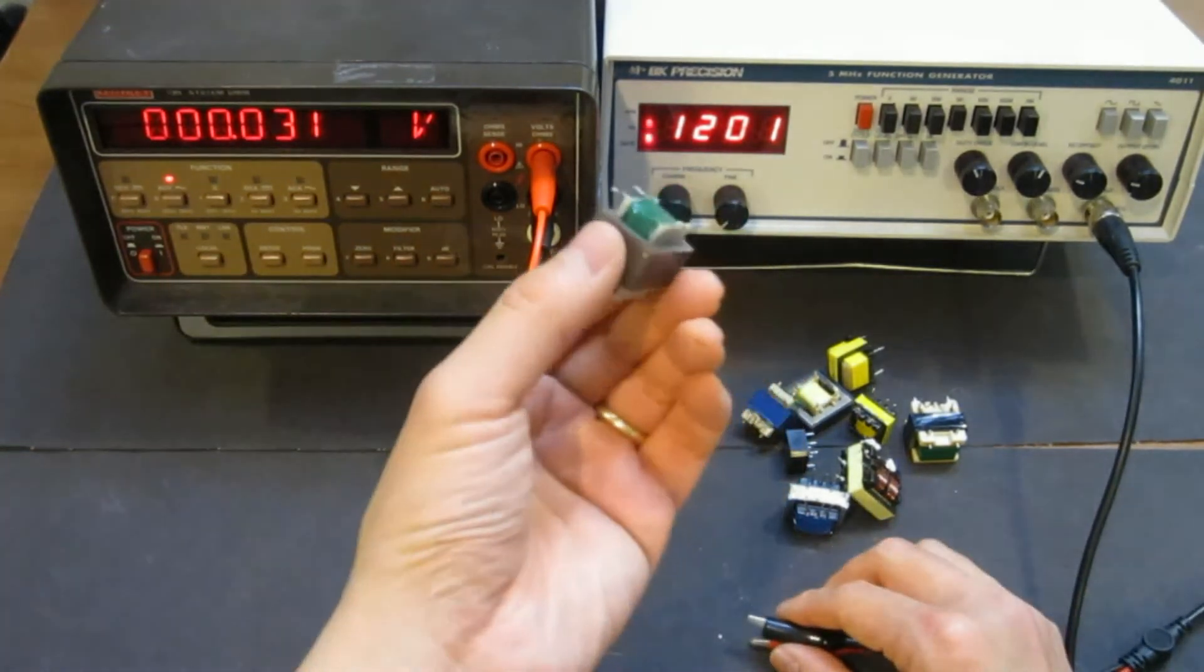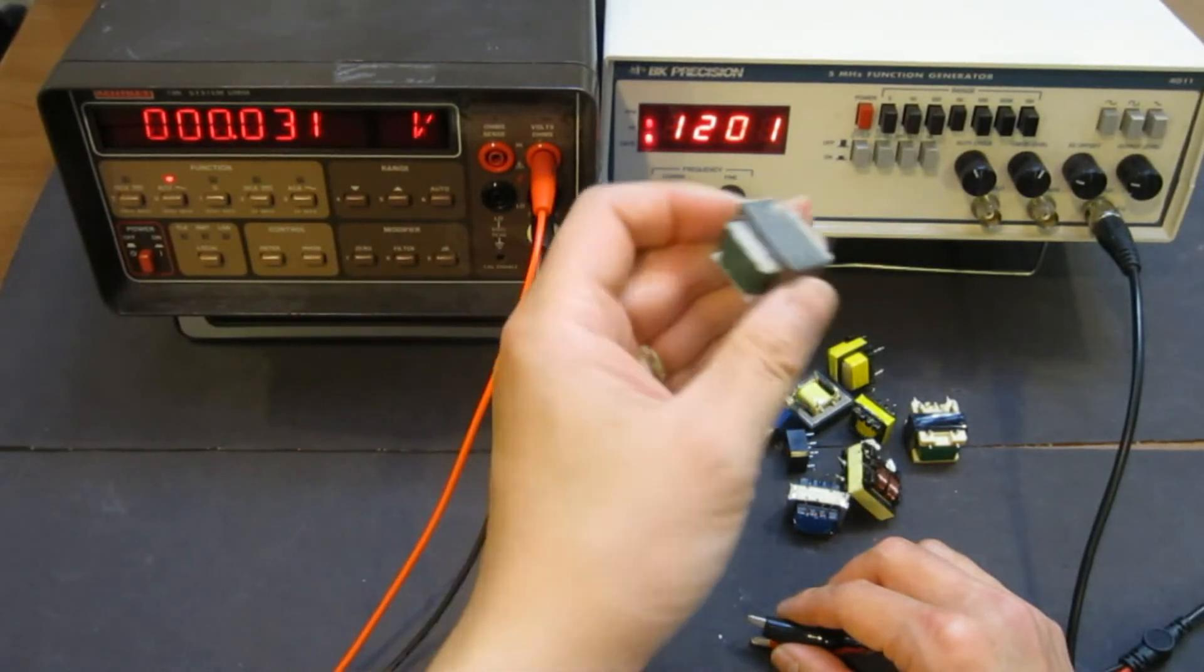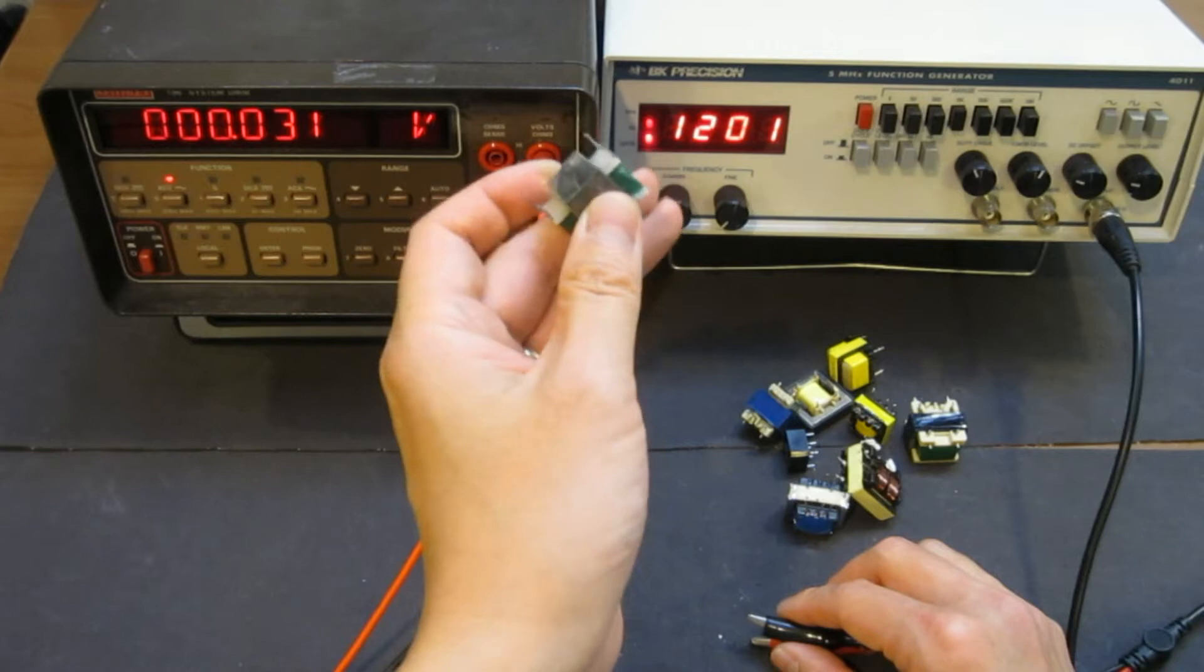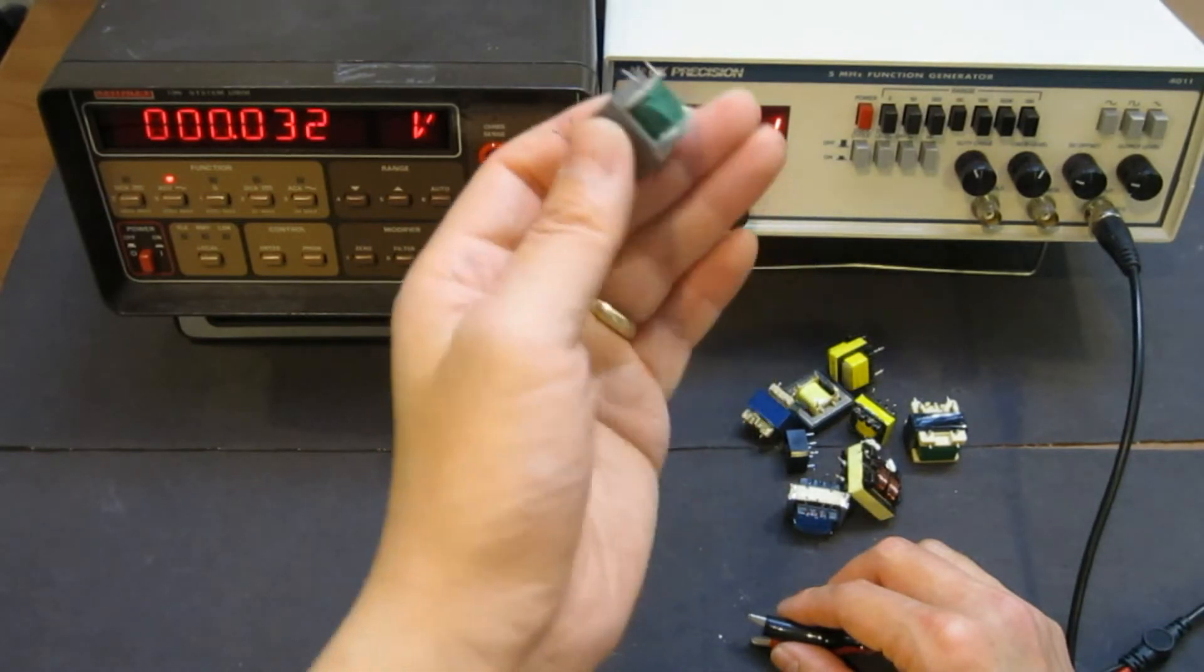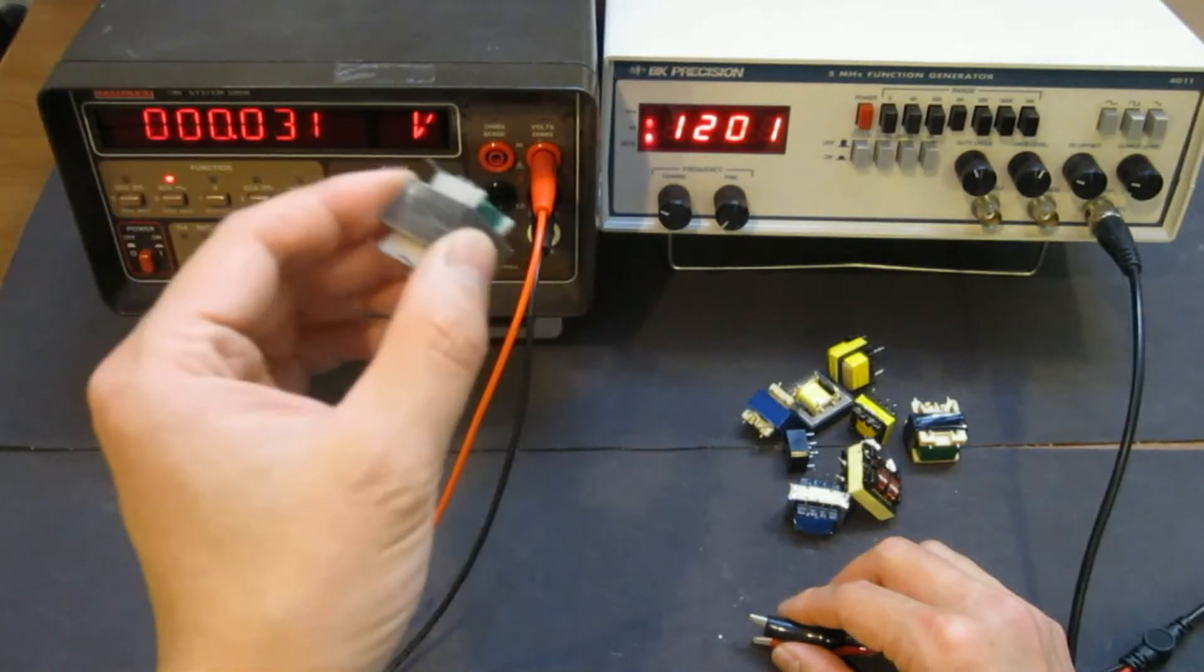So if you were using this transformer, for example, in your inverter, you wanted to design it at an operating frequency of roughly 1.2, 1.3, 1.5 kilohertz, not too much higher or lower.